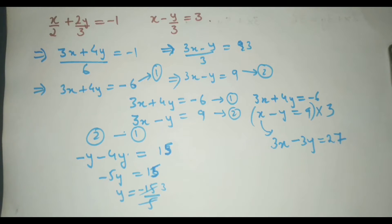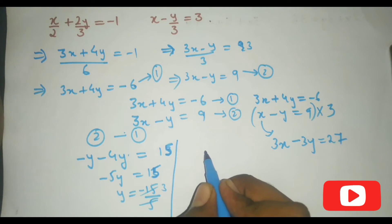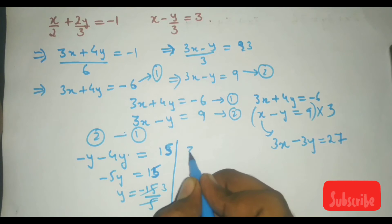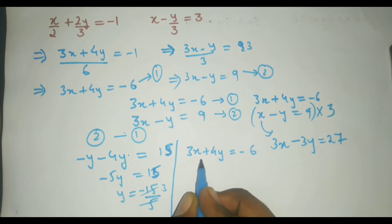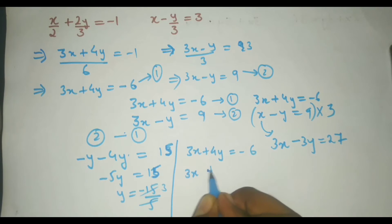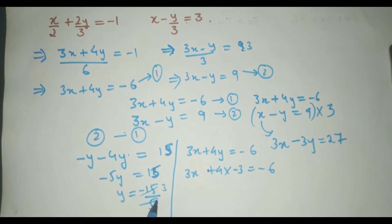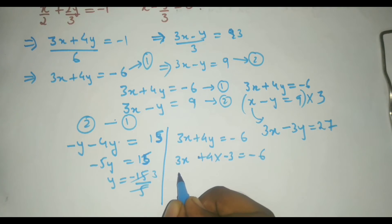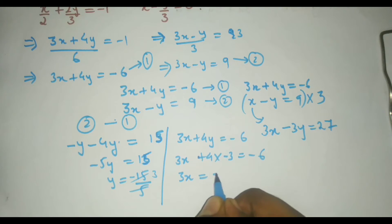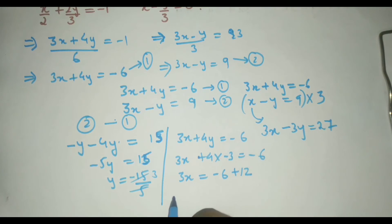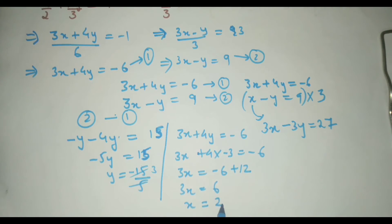Now to find the x value, substitute the y value into any of the equations. Taking the first equation, 3x plus 4y equal to minus 6, substitute y equal to minus 3. This gives 3x plus 4 times minus 3 equal to minus 6, so 3x minus 12 equal to minus 6. Shifting gives 3x equal to 6, so x equals 2.